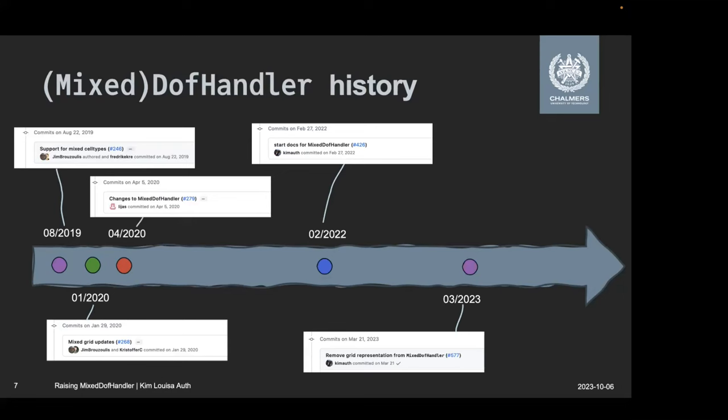One problem that we had with mixed DofHandler was that for some performance reason and things like varying coordinates of a cell, it kept its own grid representation. So that's sort of ugly, right? We already have a grid representation. We couldn't just throw that away, but then we kept a sort of duplicate in the mixed DofHandler. It was solving some performance problems, but we didn't really like that. And up to this PR, there were a number of PRs that solved these performance problems in a different way so that we wouldn't need the grid representation anymore.